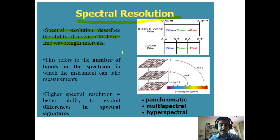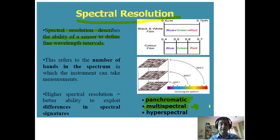In the initial lectures we discussed panchromatic band, which is a single band capturing images in a single wavelength range. We also have multispectral bands which have more than three and typically not more than ten bands — the image may be captured in six, seven, or ten bands.